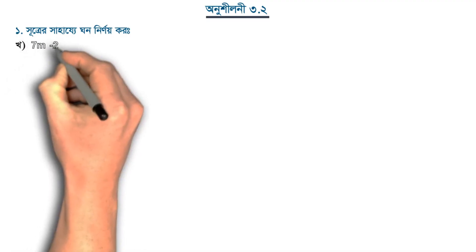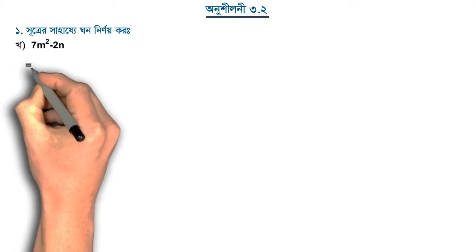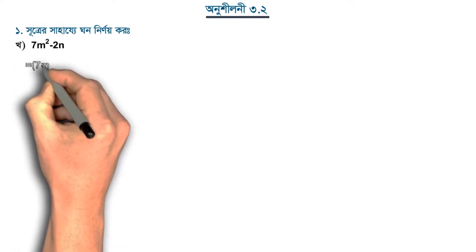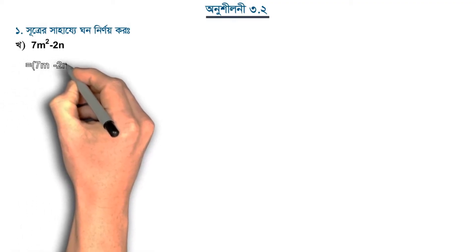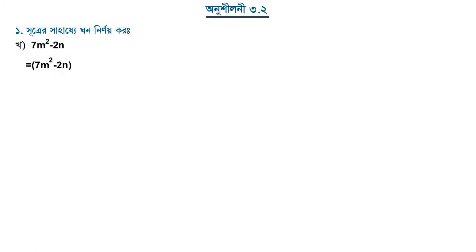The expression is 7m squared minus 2n. We will give this the whole cube, meaning we need to expand (7m² - 2n) whole cube.